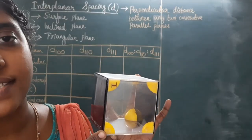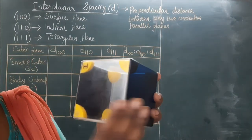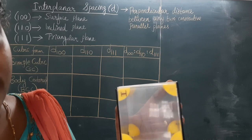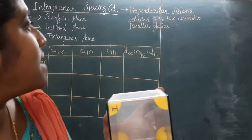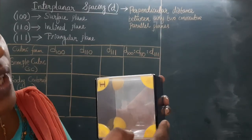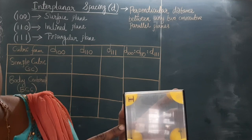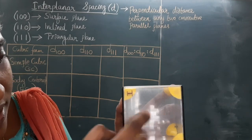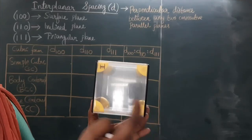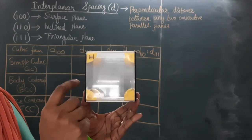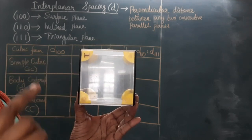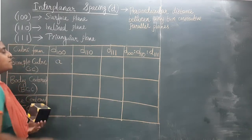In the simple cubic, we can consider the 100 family — that is the plane along the surface of this cubical structure. The atoms are arranged at the corners of the cube. The 100 family is the surface plane along the surface. If you consider one surface here, the next surface will be here. The perpendicular distance between these two parallel planes is known as interplanar distance. The interplanar distance between two adjacent 100 planes will be the edge of this cube, that is A. So D(100) = A.